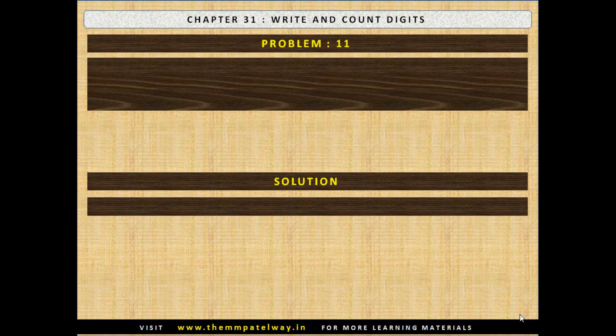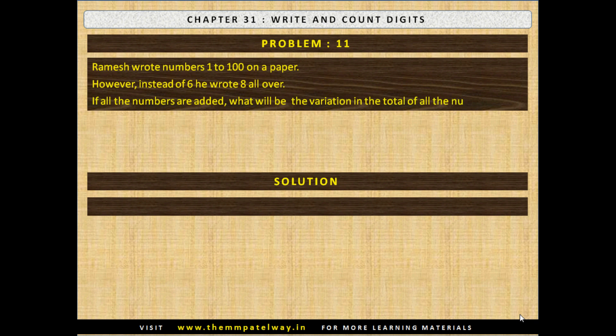Problem No. 11: Ramesh wrote numbers 1 to 100 on a paper. However, instead of 6, he wrote 8 all over. If all the numbers are added, what will be the variation in the total of all the numbers? Now stop the video and find the solution. The solution follows: the variation will be 220 — 20 in the unit column and 200 in the tens column.